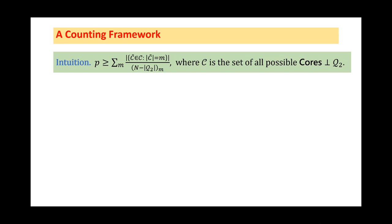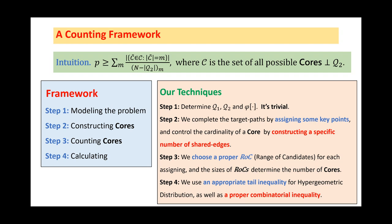In essence, the main idea of our framework is classifying the permutation P according to the cardinality of its corresponding core. To solve such problems, we propose a general counting framework. For the convenience of counting, we actually only consider the cores which are strongly disjoint with Q₂. It means that we will not use any edge in Q₂ to connect the target paths. From the inequality, we can know that if we can know the number of cores with the specific cardinality M, and also know how to calculate the summation, then we can get a lower bound of P(τ). Following the intuition, we propose a general framework. It takes four steps.